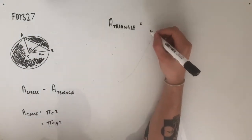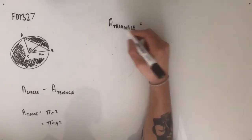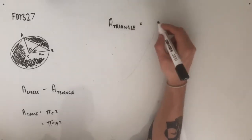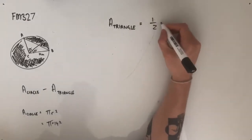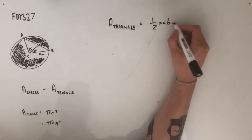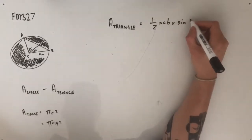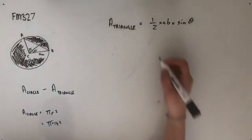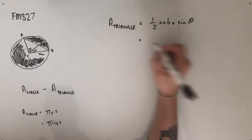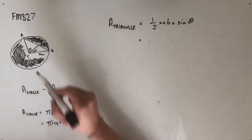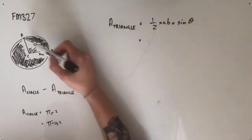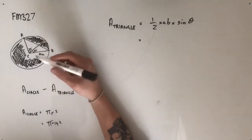So the area of the triangle, we can use our formula half a b sine theta. Use that formula there. And the way we're going to use this formula is by treating this triangle as a whole triangle, rather than two separate triangles.